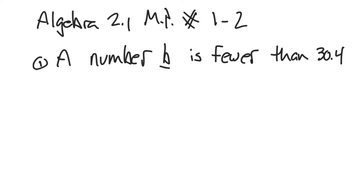All righty! We've got Algebra 2.1, Monitoring Progress, Numbers 1 and 2. Here, we're working on turning written sentences, like English written sentences, like 'a number B is fewer than 30.4,' into a mathematical statement using symbols.